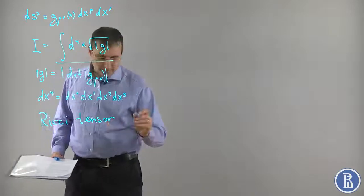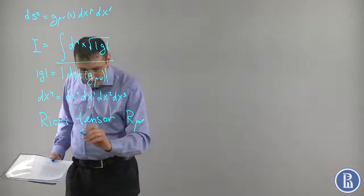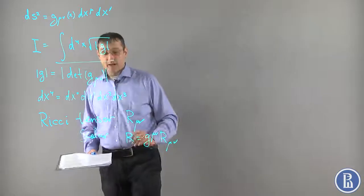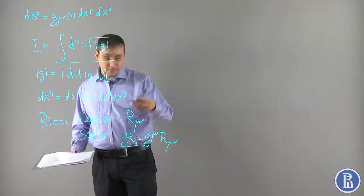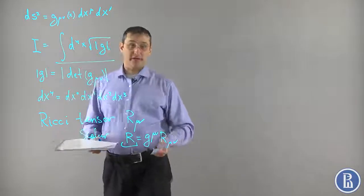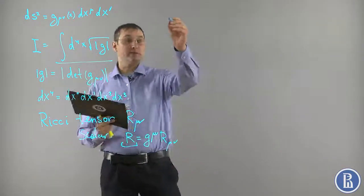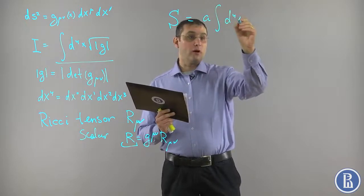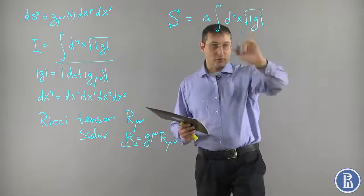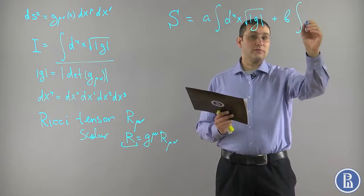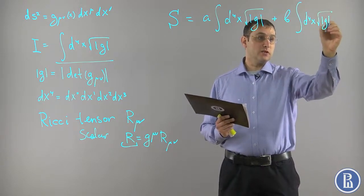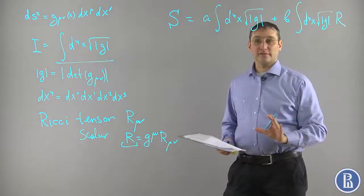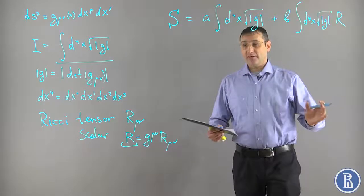The Ricci scalar R is just g^{μν} times R_{μν}, and this is invariant. We integrate it over the volume to obtain the action. The proposal for the action is therefore: S = A ∫d4x √|g| + B ∫d4x √|g| R. These are the two simplest invariants one can write; the second one already contains derivatives of the metric, unlike the first. Together they can give us something that describes dynamics.